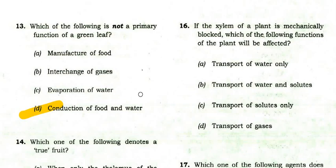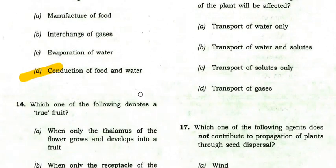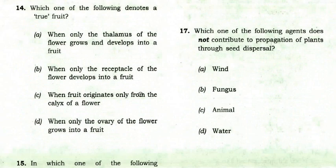Which one of the following denotes a true fruit? The right option is when only the thalamus of the flower grows and develops into a fruit — this denotes the true fruit.